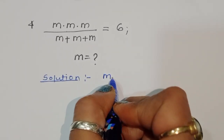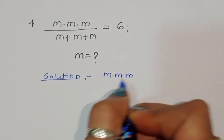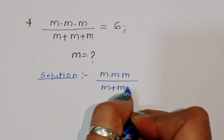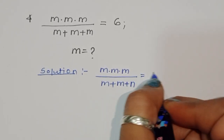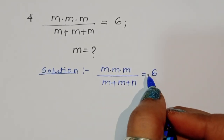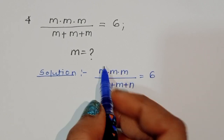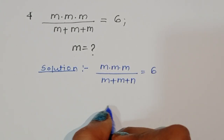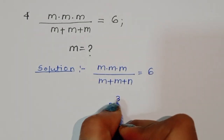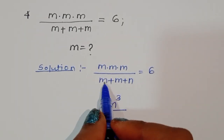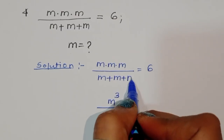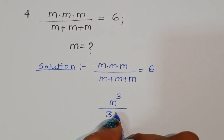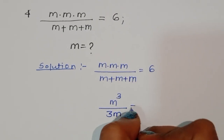Solution: m times m times m divided by m plus m plus m equals 6. We can simplify: m times m is m squared, times m is m cubed. So it becomes m cubed divided by m plus m plus m, which becomes 3m. So m cubed divided by 3m is equal to 6.